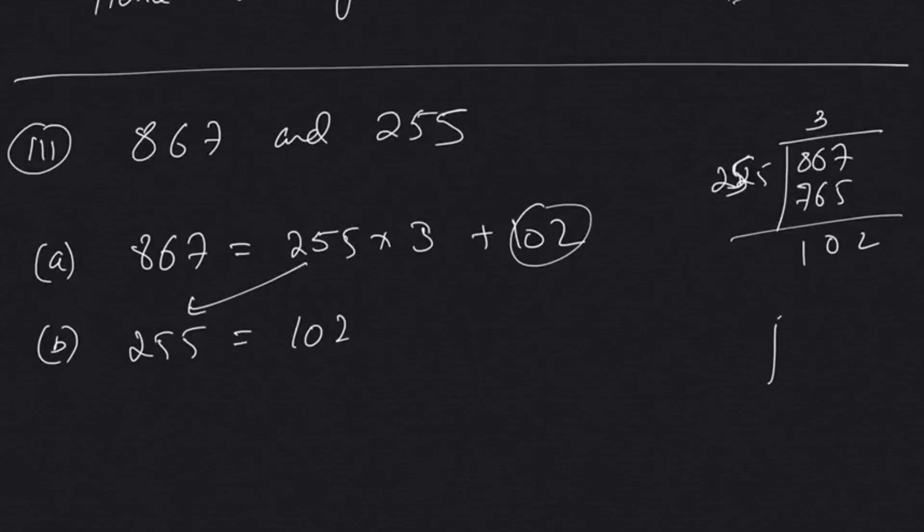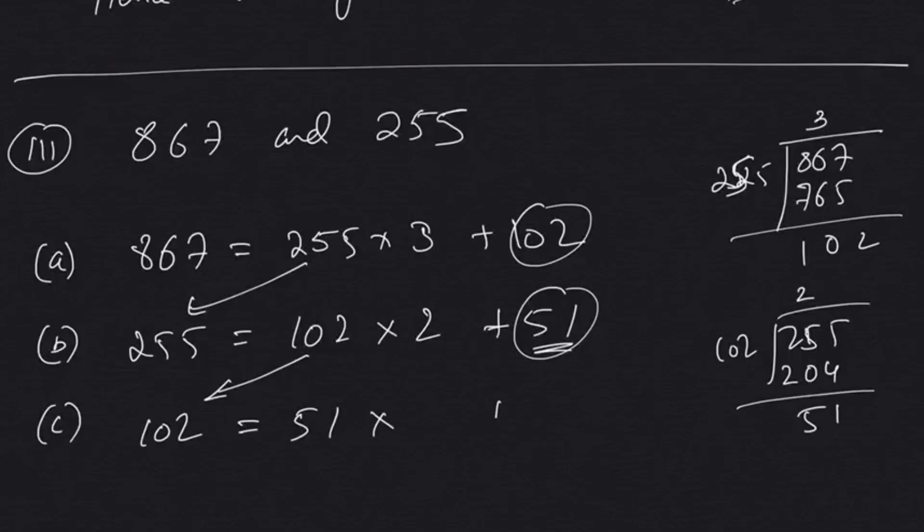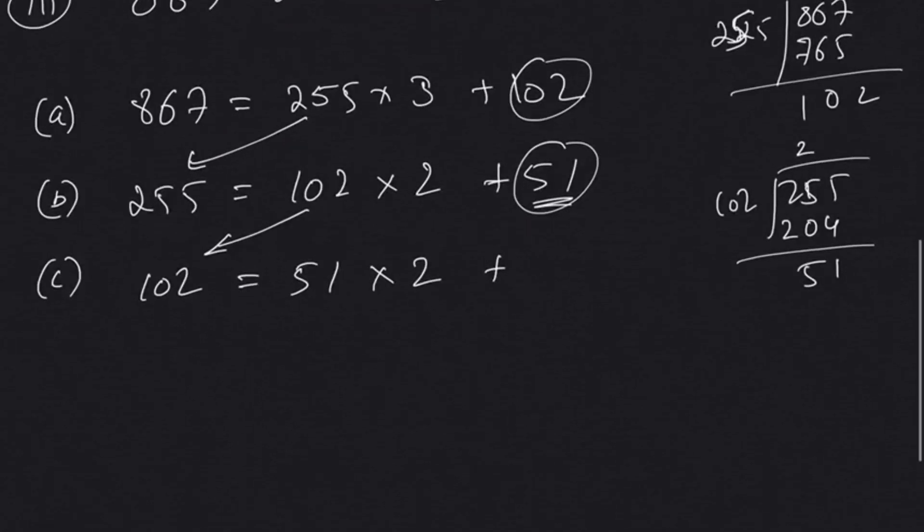Next step, we'll continue with 255 equal to... we'll divide 255 by 102. So 102 times 2, that'll leave us with remainder 51. We'll continue again because our remainder is still not 0 yet. So now we'll bring 102. Now we'll divide 102 by 51. So 51 into how many times? Exactly, that will be 2 times. So that'll leave us with the remainder 0.